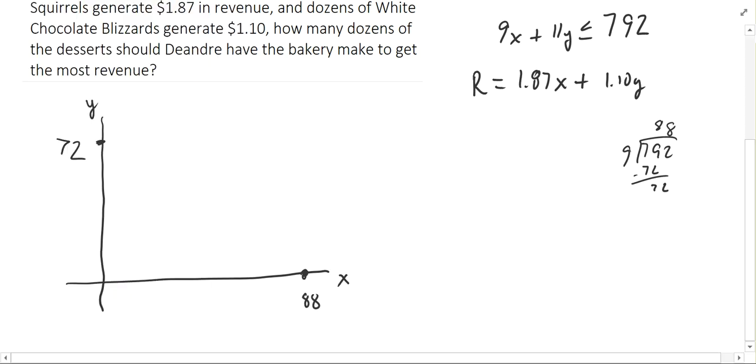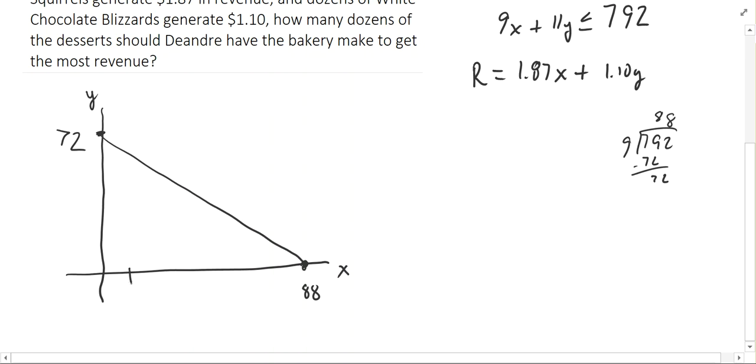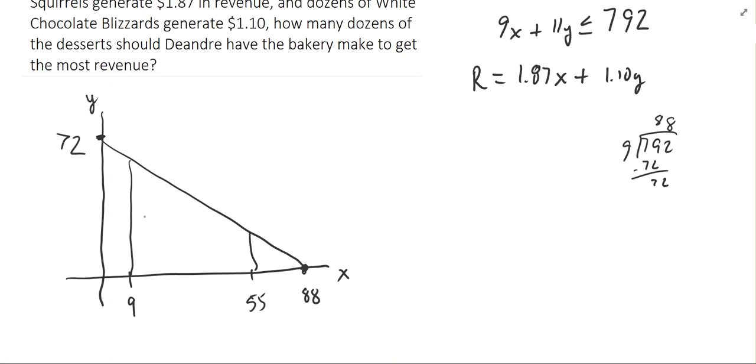And so my constraint equation, there's my constraint equation, 9X plus 11Y equals 792. I also have the restriction that X needs to be between 9 and 55. So I'm limited to this interval on the X axis there between 9 and 55. And my Y values need to go between 25 and 36. 36 is half of 72, so that's going to be about there, and 25 somewhere in this area. And so what I've got for my feasible region, I need to be sort of in this little band, but I also need to be underneath that line in there.